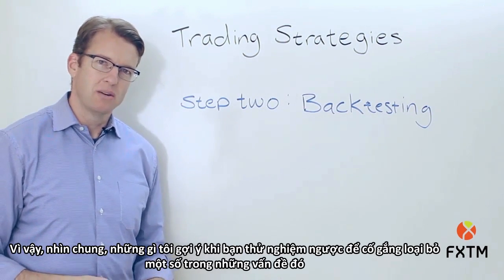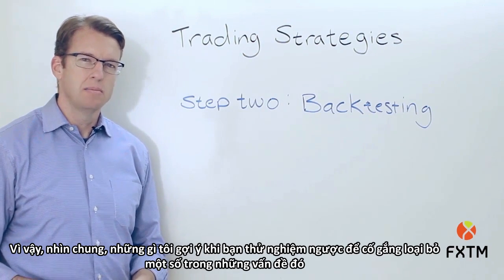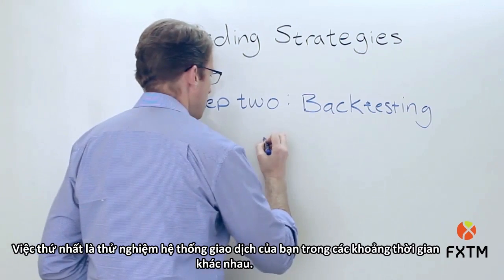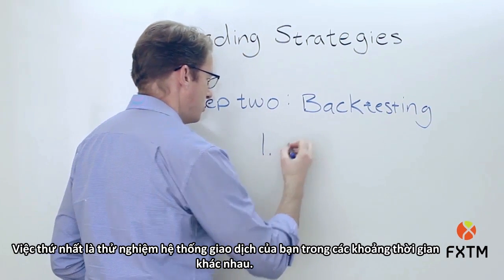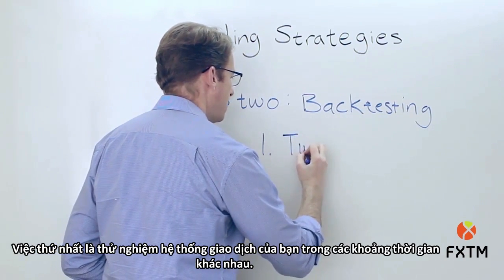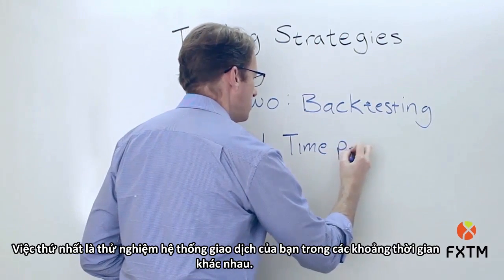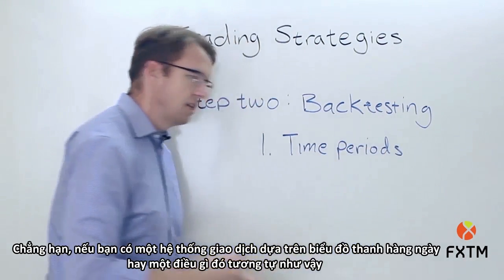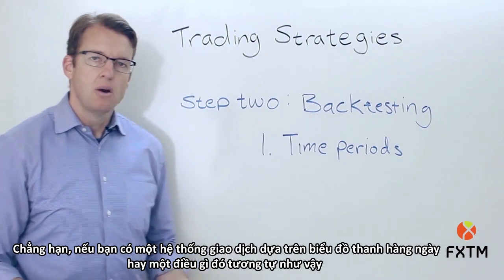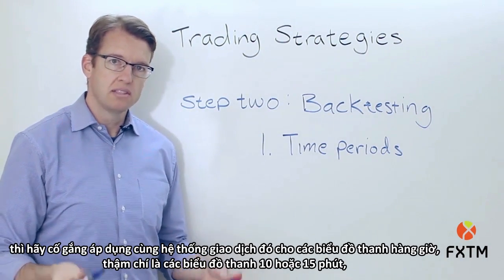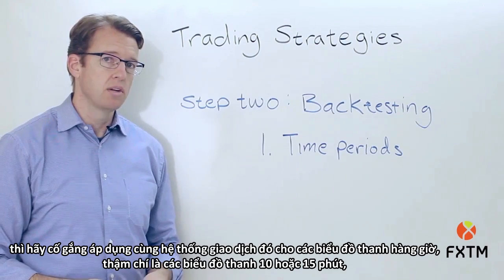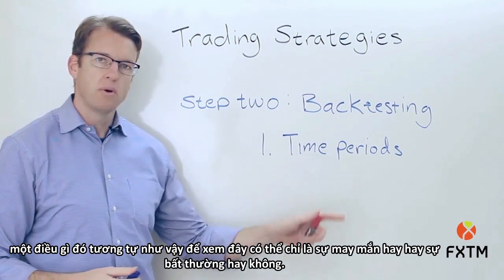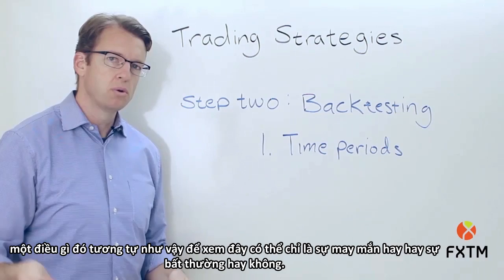Generally speaking, when you're backtesting, I would suggest doing essentially three things to eliminate some of those problems. Number one is to test your trading system over different time periods. For example, if you have a trading system that relies on daily bars, try to apply the same trading system to hourly bars or even 10 or 15 minute bars to see whether or not this may be just a fluke or an anomaly.